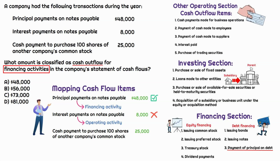The last item: a cash payment to purchase 100 shares of another company's common stock — an equity investment. Because it's probably a short-term investment of a small amount, it's classified as trading, which is a cash outflow to the operating section. Either way, it's not part of financing, so that $25,000 is not part of financing. Ultimately, the only item that can be considered a cash outflow for the financing section is principal payments on notes payable — so $48,000 is the correct answer.